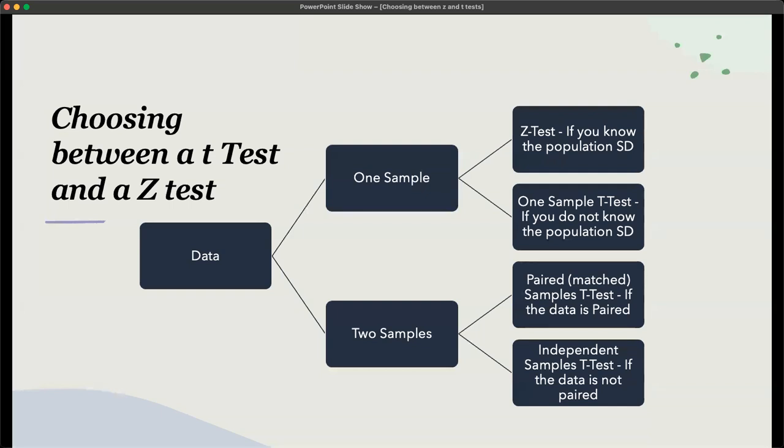Do you have either one sample or two samples? So do you only have one class of students or do you have two classes of students? Or with two samples, you could have one class of students with two different tests. So let's start with the one sample. If you only have one sample, but you already know the population standard deviation, then you would use a Z test.